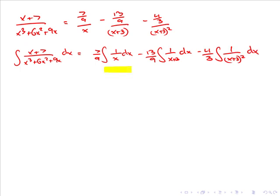In the first case here we have the integral of 1 over x dx. This can be integrated directly to simply give us ln the absolute value of x.